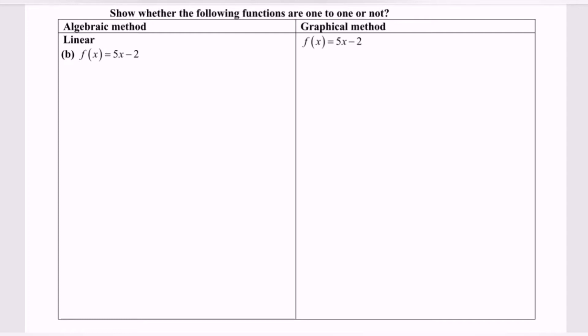Now given the situation is a linear equation: f(x) equals 5x minus 2. By using the algebraic method, I'm going to determine whether the function is one-to-one or not.